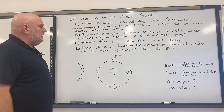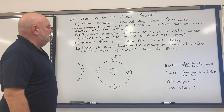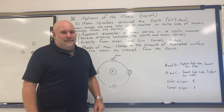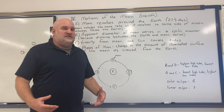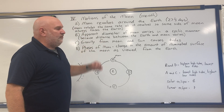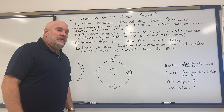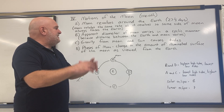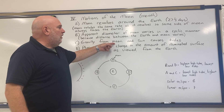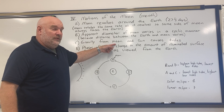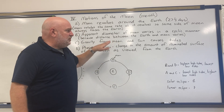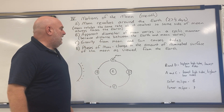Gravity from the moon and the sun causes the tides. The sun is a lot bigger than the moon, so you'd think the sun would have a bigger influence on Earth's tides. But even though the moon is smaller, it's a lot closer. So even though the moon has less gravity overall, we get more of an effect from it because we're closer to it. The sun has a lot of gravity but it's really far away — a combination of those two causes the tides on the Earth.